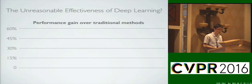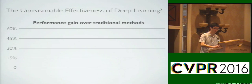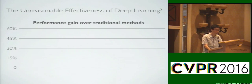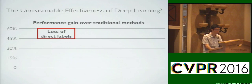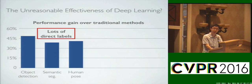Deep learning has made enormous progress in many vision tasks. If we measure its performance gain over traditional methods, one can see that it has completely dominated in tasks that have lots of direct labels, like object detection, semantic segmentation, pose estimation, and so on.